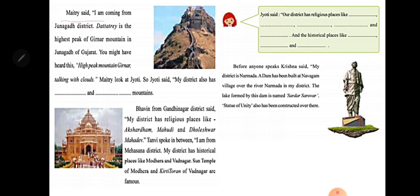Maitri said: I am coming from Junagadh district. The Tathre is the highest peak of Girnar mountain in Junagadh, Gujarat. Jyoti added: my district also has Pavagadh hill. In Vadodara there is no single mountain, but Pavagadh hill is situated in Vadodara.